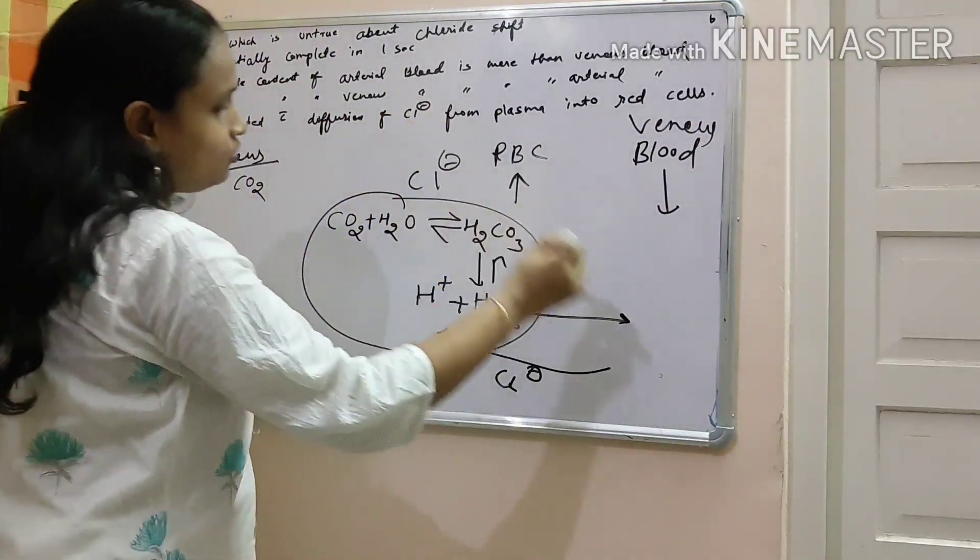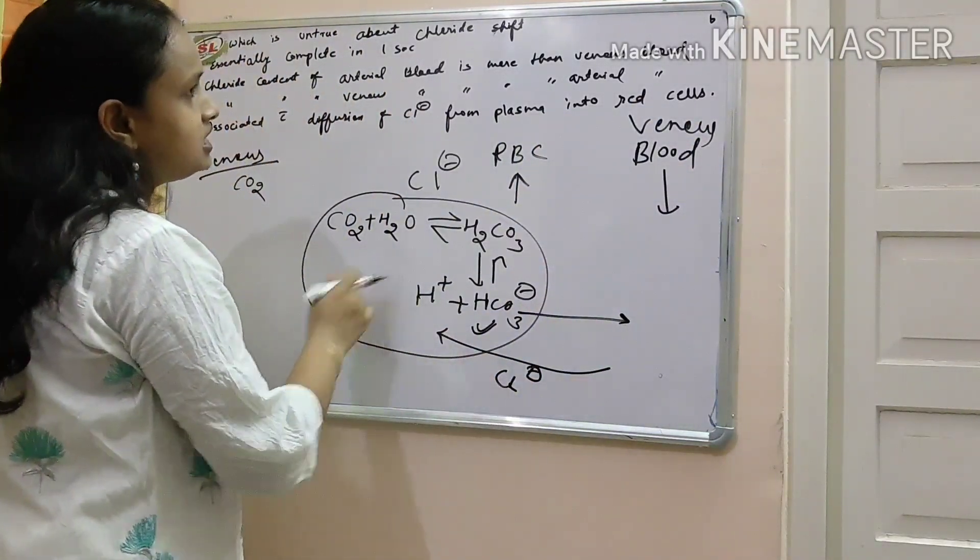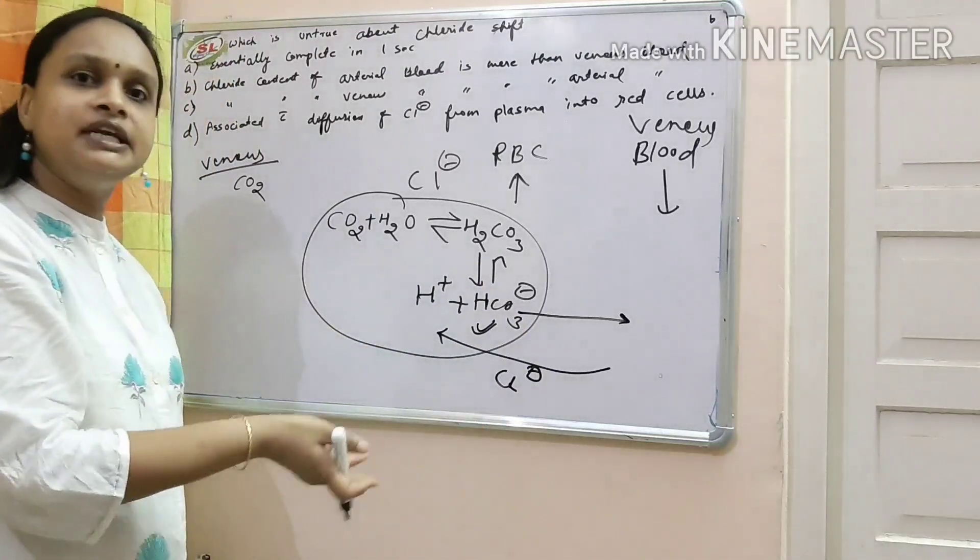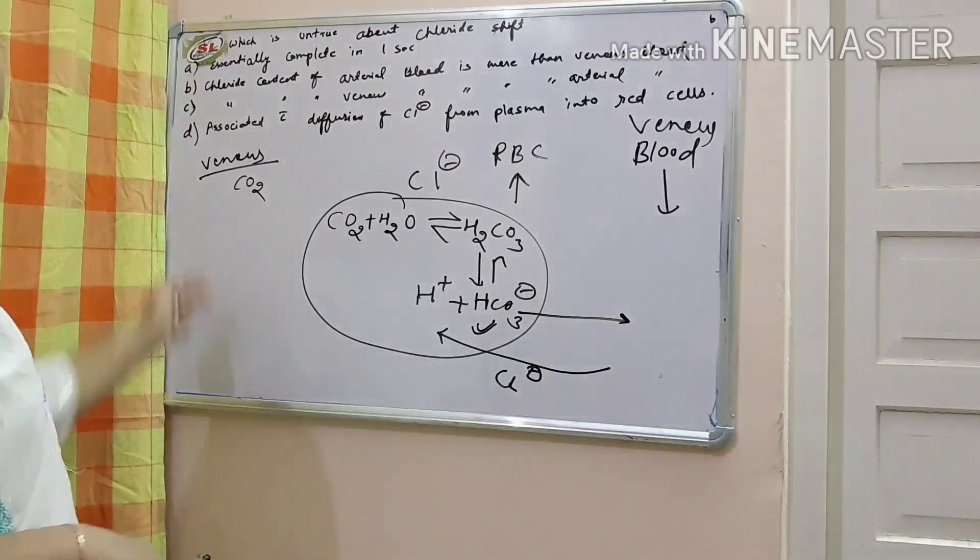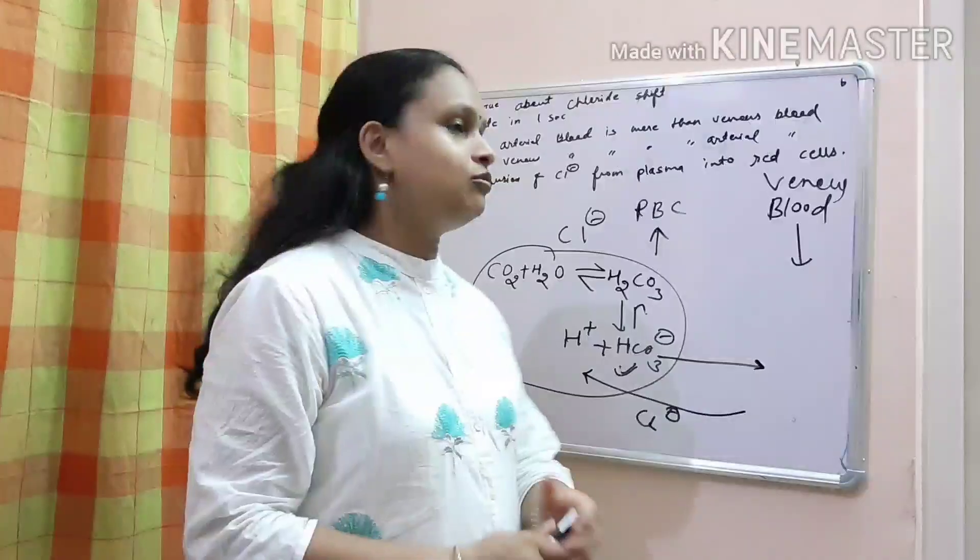And last one is associated with diffusion of chloride from plasma into red cell. Very simple. In this, chloride is going inside the RBC from plasma. So it is very easy. So, wrong answer would be C.